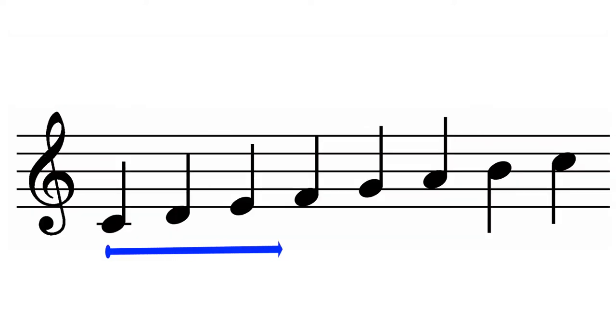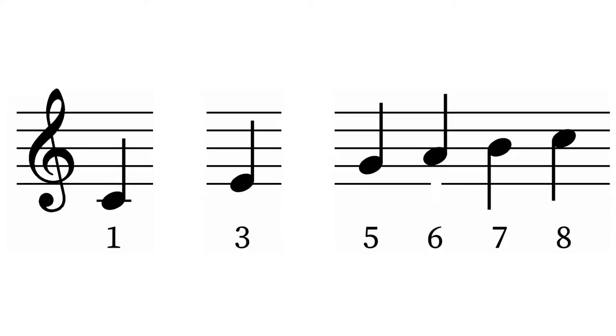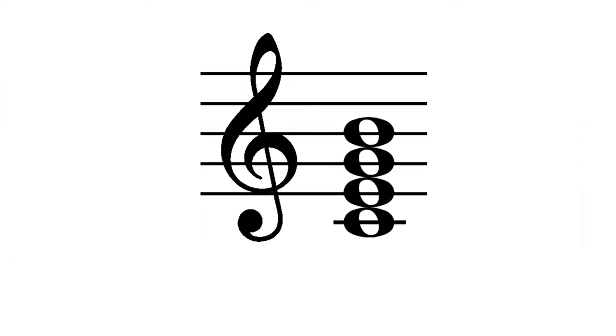Scales are written horizontally on the staff to indicate the notes are played one after the other. But if we take every second note of the scale and stack them on top of each other, we have a vertical arrangement to indicate the notes are played at the same time.